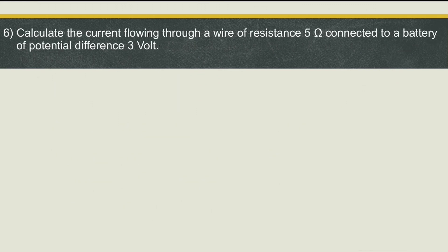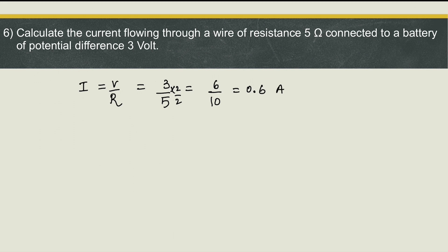Next question: calculate the current flowing through a wire of resistance 5 ohm connected to a battery of potential difference 3 volt. Current I = V/R = 3/5. This can be written as 6/10 = 0.6 ampere. So 0.6 ampere is the current.